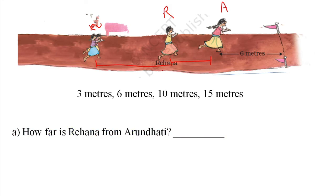How far is Rehana from Arundhati? Arundhati is 6 meters from the finish line. The distance from Rehana to Arundhati seems about half of that, so it is 3 meters. We don't have any answer less than 3 meters, so the answer is 3 meters.